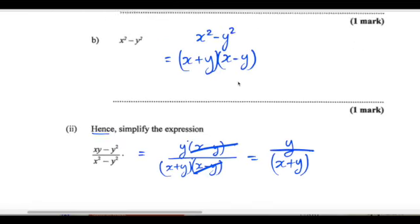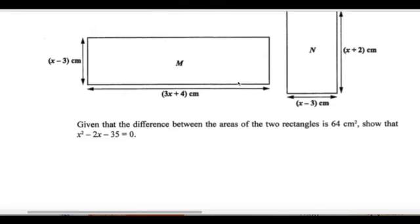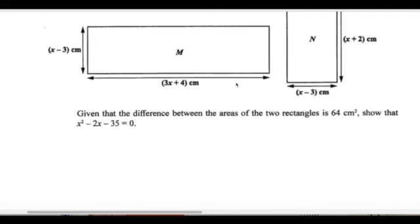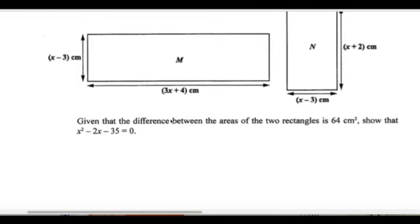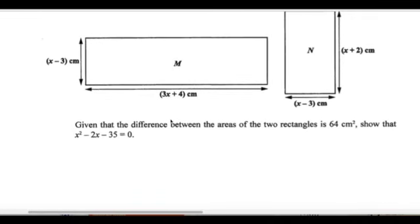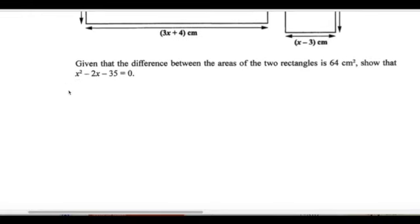Number two part c. The diagram below shows two rectangles, M and N, with their dimensions expressed in terms of x. Given that the difference between the areas of the two rectangles is 64, show that x squared minus 2x minus 35 equals zero. This question is worth four marks, so let's find the area of M and the area of N and then find the difference.